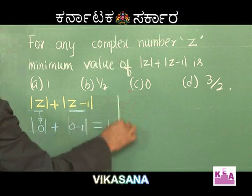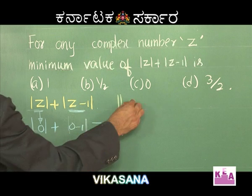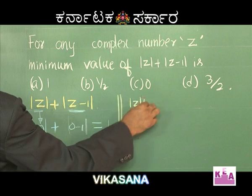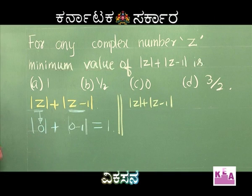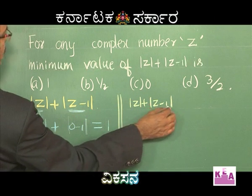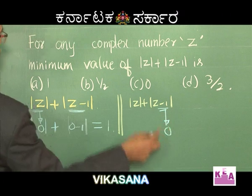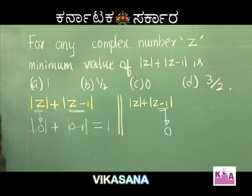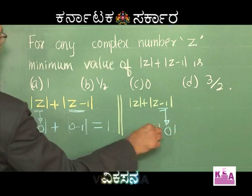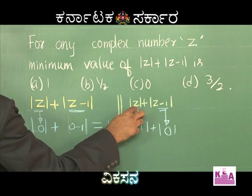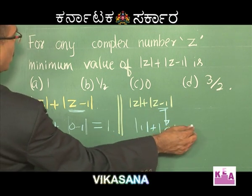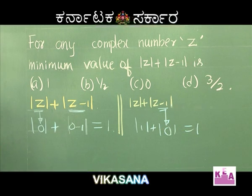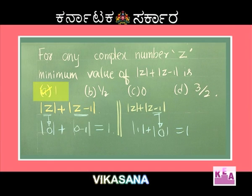That is case 1. Now consider the second case: take mod z plus mod of z minus 1, and make z minus 1 equal to 0, so z equals 1. This gives modulus of 1 plus modulus of 1 minus 1, which is 1 plus 0, equal to 1. So the minimum value is 1. This is the shortest way of approaching this problem.